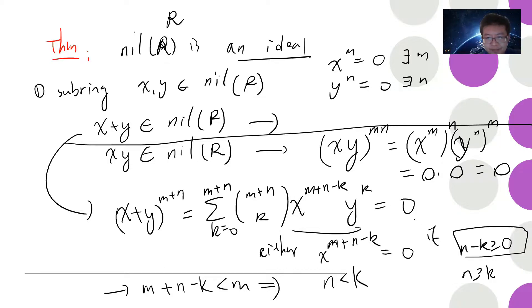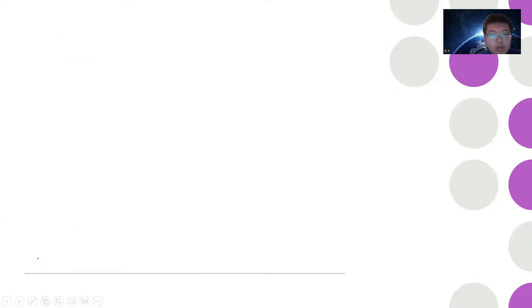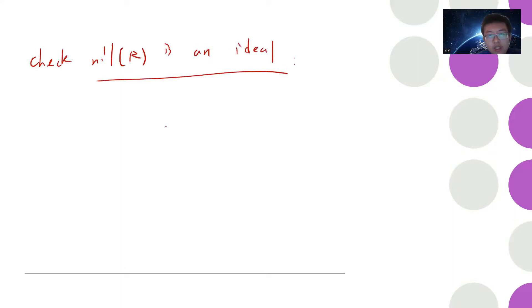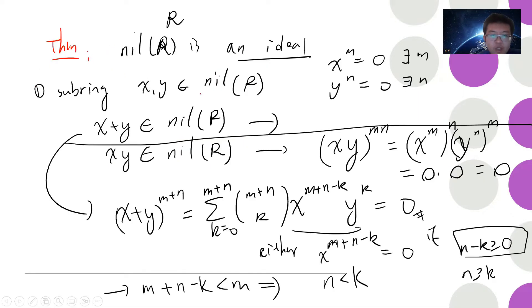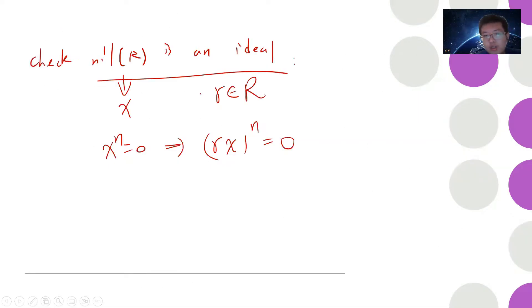Now we check that nil(R) is an ideal. Take any r in R and x in nil(R) with x^n = 0. Then (r·x)^n = r^n · x^n = 0, so r·x belongs to nil(R). Therefore nil(R) is an ideal.